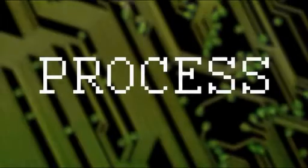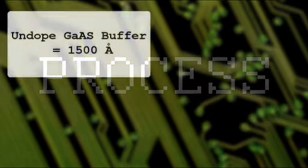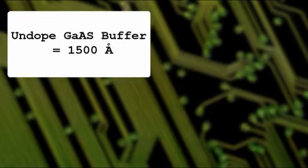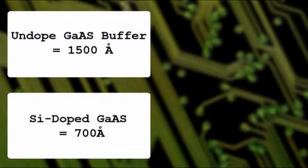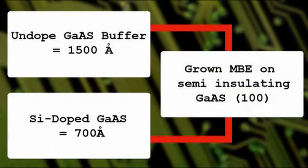The fabrication process: The undoped gallium arsenide buffer is about 1500 angstroms, and the silicon-doped gallium arsenide layer is equal to 700 angstroms.